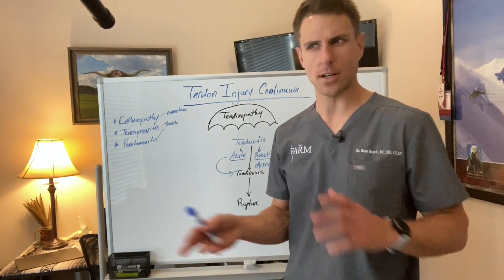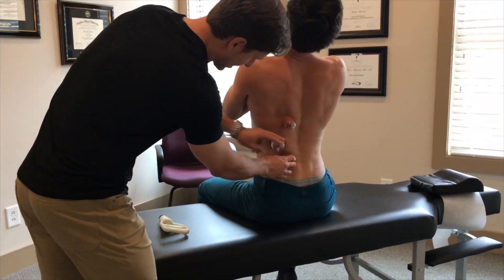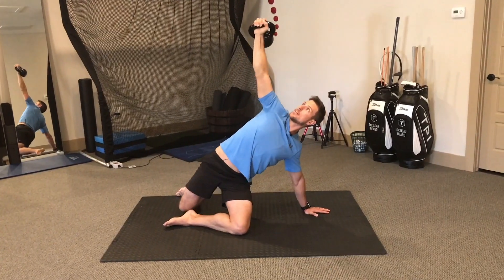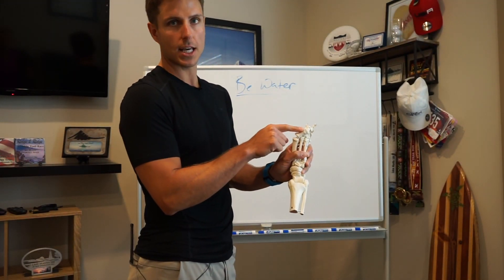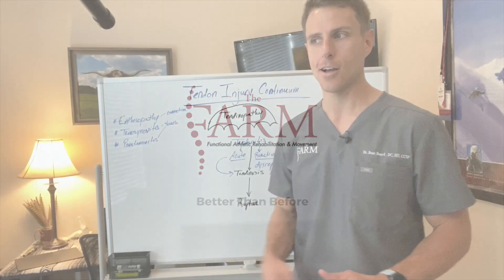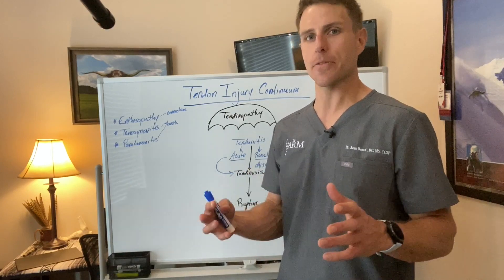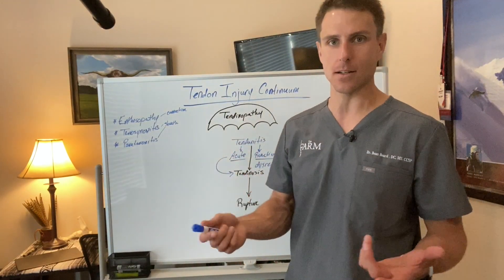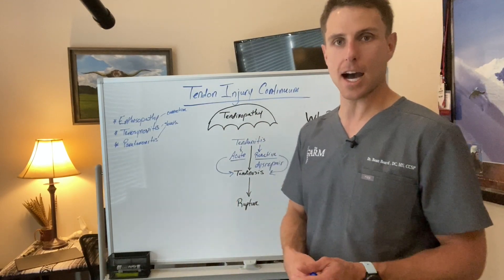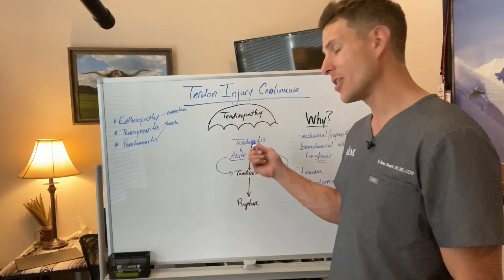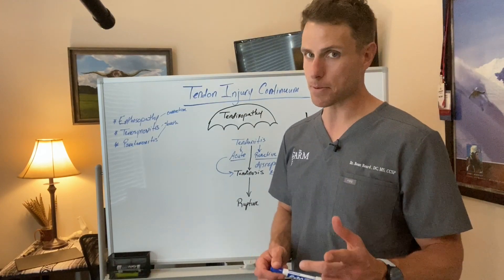Have you been told you have tendinitis, tendinosis, tendinopathy, or you're not quite sure what you have? I had a patient the other day who asked me — I threw out the terms tendinosis and tendinopathy, and he was like, well what's tendinitis? So we're going to talk about any kind of injury involving a tendon and the continuum of tendon injuries. To start, we need to talk about the umbrella term of tendinopathy. 'Opathy' means that something is wrong — some sort of pathology with a tissue, and obviously it's a tendon: tendinopathy. That in itself is a catch-all term, so if you've been diagnosed with a tendinopathy, it's not that specific — we have to dig a little deeper.